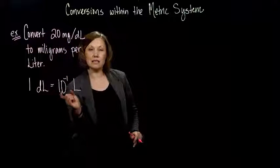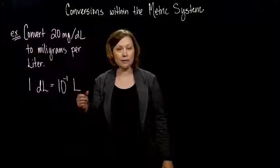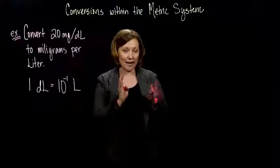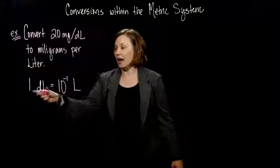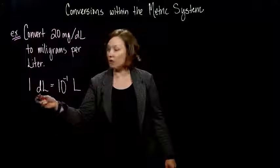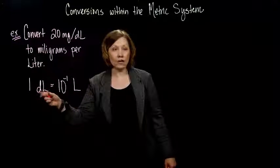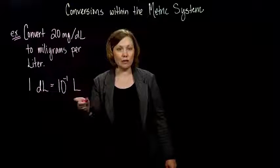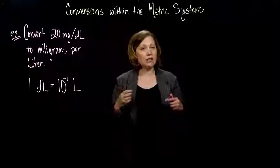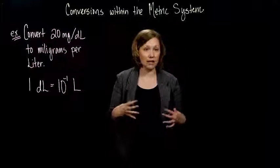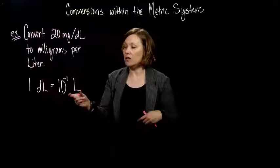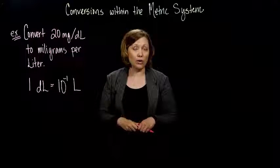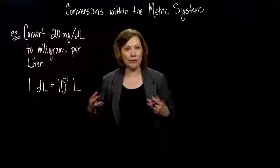Whatever that 10 to the power is next to, or in the column, in that far right column on your chart, that is what one of those, whatever that unit they're talking about is. So, 1 deciliter is equal to 10 to the negative 1 liters, because everything in that chart is in terms of the basic unit. So, the basic unit is liters for volume, so everything in there is in terms of liters.